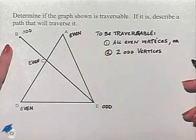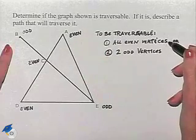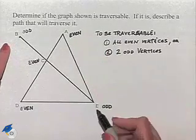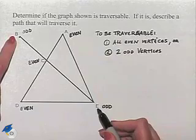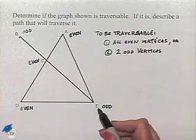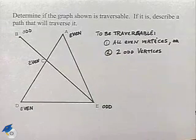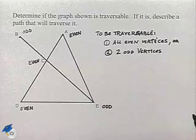So looking back to our criteria, we don't have all even vertices, but we do have two odd vertices. Now if two are odd, then we can find a path by beginning at one odd and ending at the other.